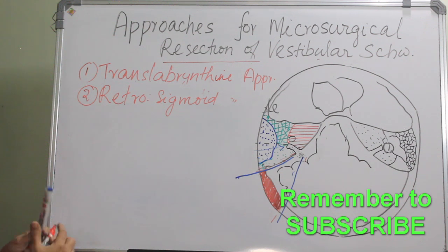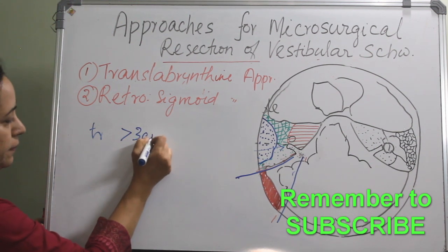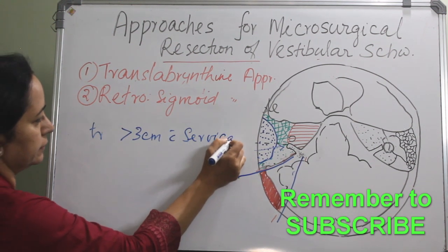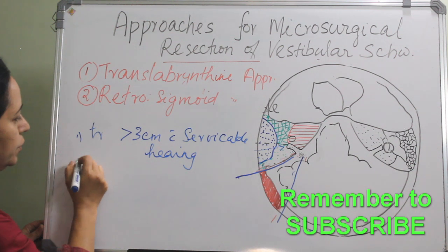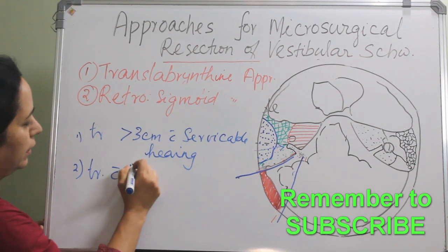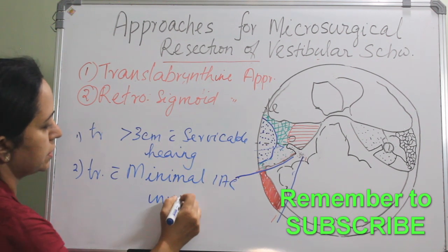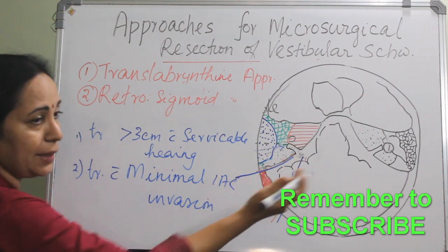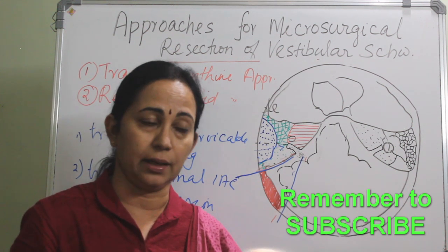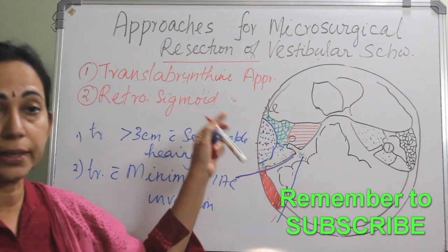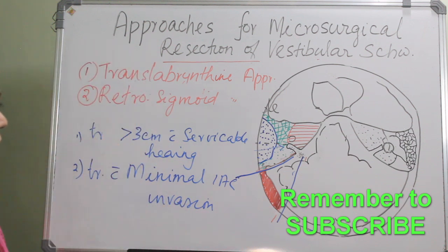The indications are: tumors of the CP angle of less than 3 cm with serviceable hearing, and also tumors with minimal IAC (internal auditory canal) invasion. Because we are getting access only to the medial two-third of the internal auditory canal, if there is complete extension involving the fundus — the lateral most end — we cannot access it. In that case it is better to go with a translabyrinthine approach. So these are the indications of Retrosigmoid.